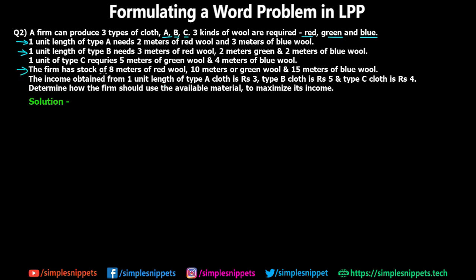There is a certain limitation: the firm has a stock of eight meters of red wool, ten meters of green wool, and fifteen meters of blue wool on a particular day. After selling the cloth, the income from one unit of cloth A is rupees three, from cloth B is rupees five, and from cloth C is rupees four. The question is to determine how the firm should use the available raw materials to maximize its income — so this is a maximization problem.